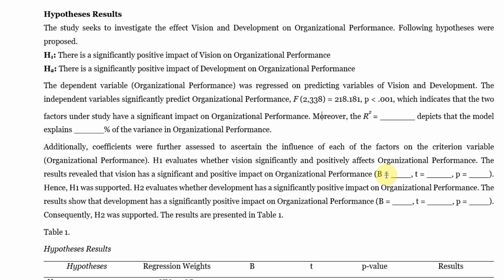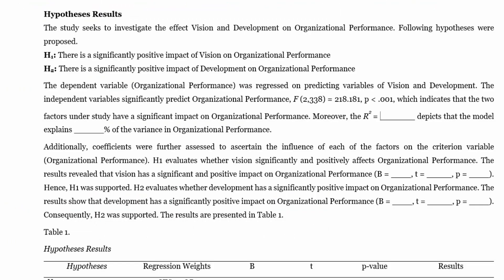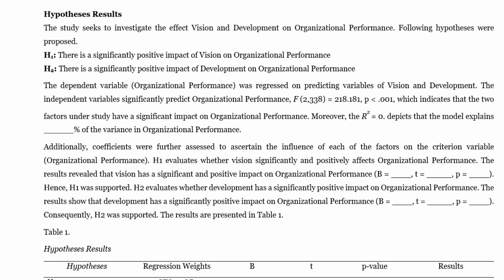This indicates that the two factors in the study have a significant impact on organizational performance. Your R square value 0.564 depicts that the model explains 56.4% change in the organizational performance.